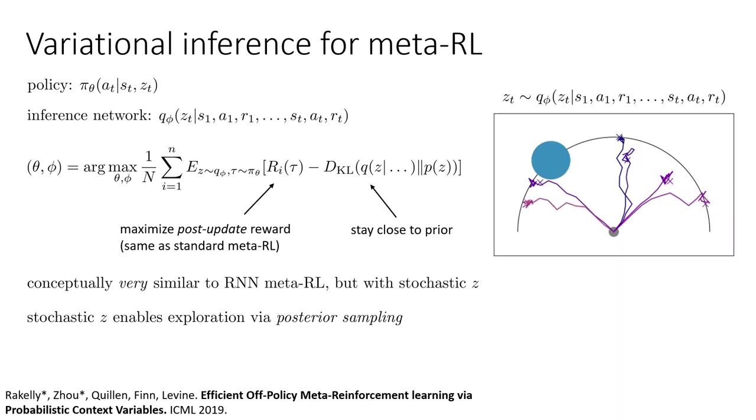So stochastic Z enables exploration by posterior sampling. So here's an illustration of this process, and this will also hopefully make it clear to you why it's a little bit suboptimal. So here we have a little 2D point mass. The goal always lies in that semicircle. The blue circle represents the true goal for this task, which the agent doesn't know at the beginning. And you can see that the way the agent explores is by going to random places on the semicircle, and then once it hits the regions that have high reward, then it keeps going there again and again. So this works pretty well. But hopefully this also makes it clear why this is a little bit suboptimal, because of course, in reality, it might be more optimal for the agent to sweep along that circle in a single episode to find where the reward is, and then revisit the reward again and again. And that would, of course, work better.